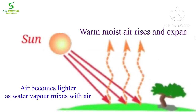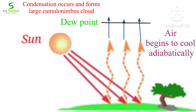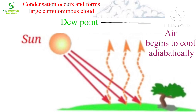As water vapor mixes with the warm air, it becomes lighter, and then this warm moist air rises up and expands. Then it begins to cool adiabatically. After reaching the dew point, condensation occurs, and it forms a large cumulus cloud and sometimes even a cumulonimbus cloud.